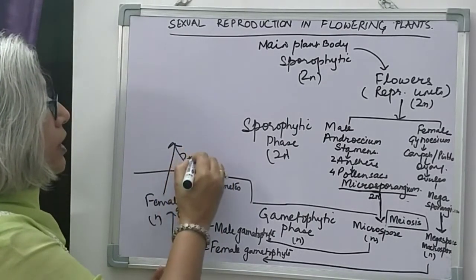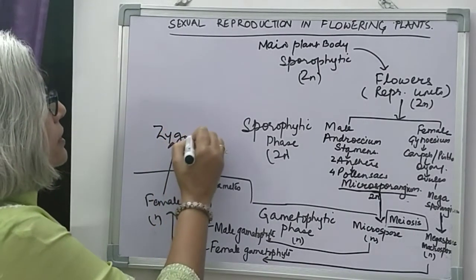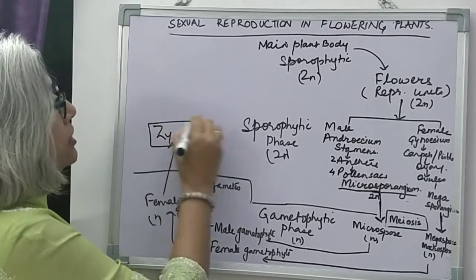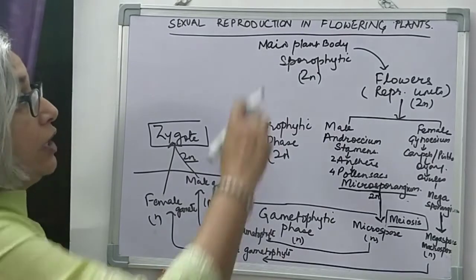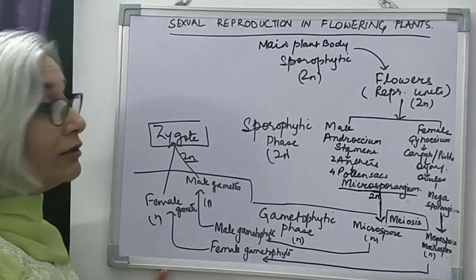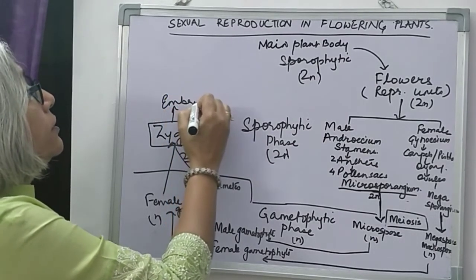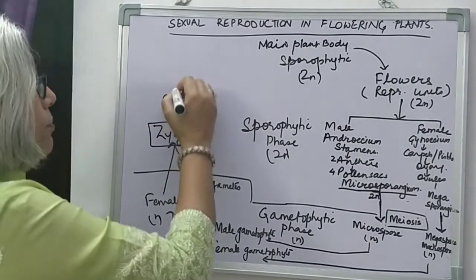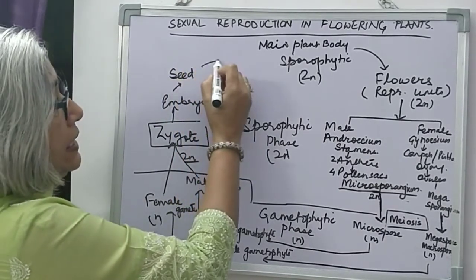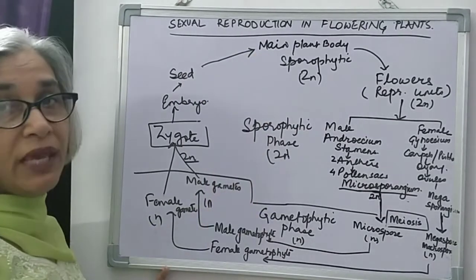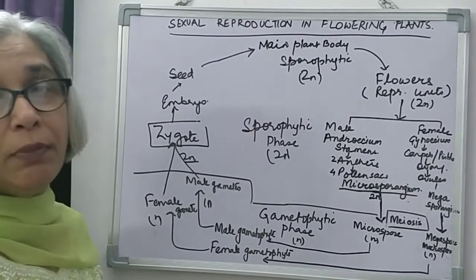The male gamete and the female gamete unite, so n + n again becomes 2n number of chromosomes — a diploid cell is formed. The zygote is the first diploid cell in the sporophytic phase in the life cycle of a flowering plant or angiosperm. This zygote undergoes divisions to form the embryo. The embryo is contained in the seed, which then germinates to form the main plant body. So this is the life cycle of an angiospermic plant.